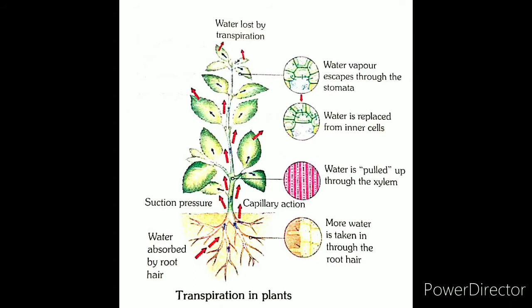This process by which plants release water from their leaves is called transpiration. Transpiration is affected by the following factors: temperature, humidity, wind speed, and time of the day.